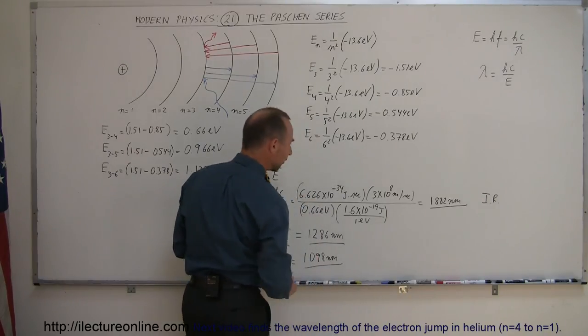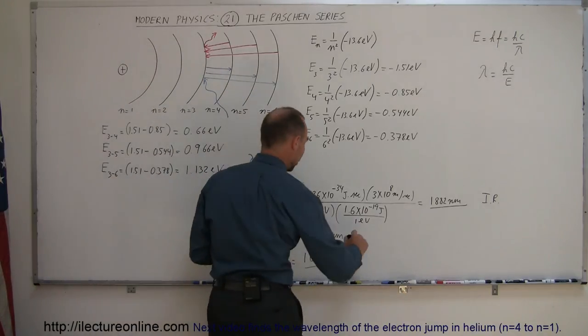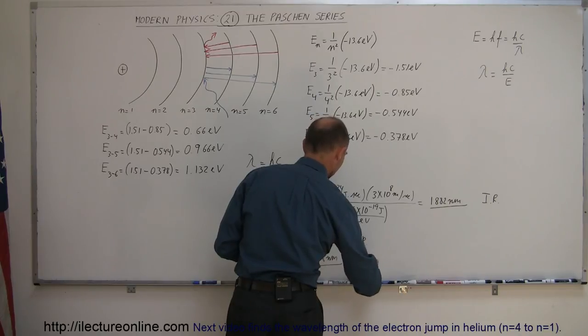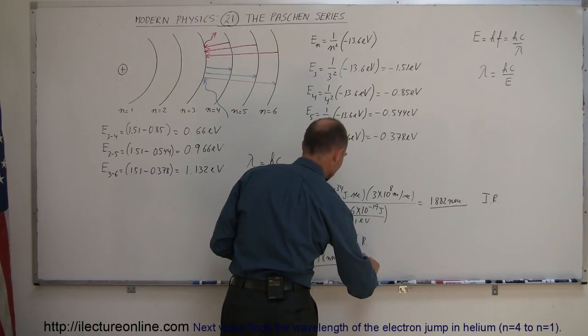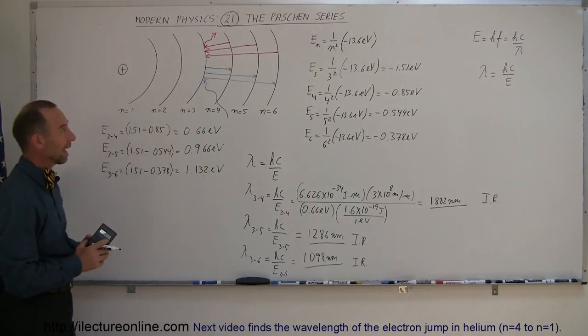And again, well above the visible light range from 400 to 700 nanometers. So all these waves, all these photons emitted, fall in the infrared radiation range, and that's known as the Paskin series.